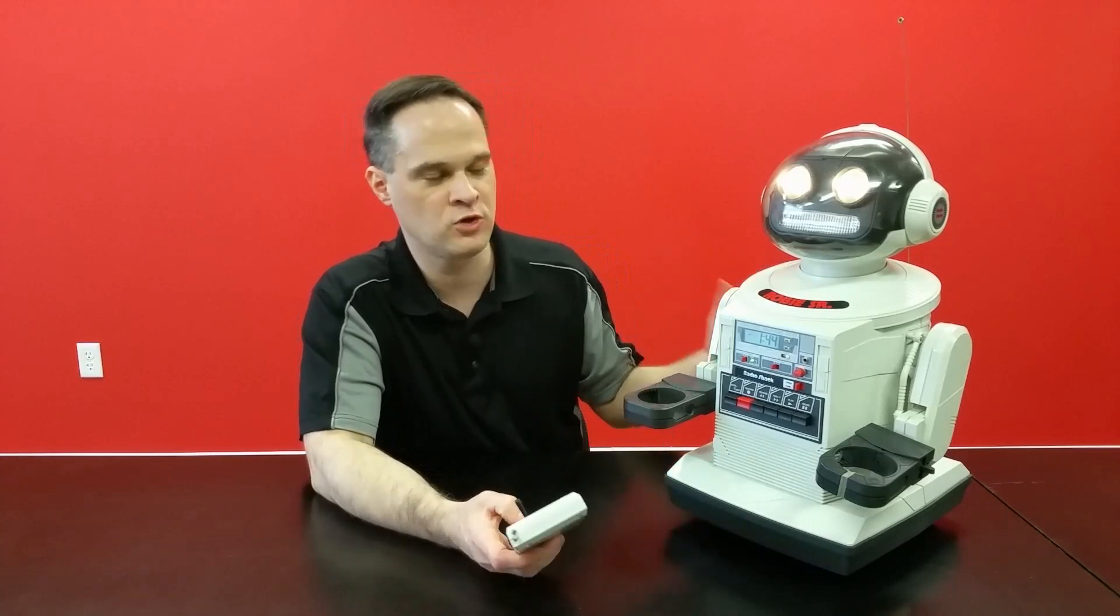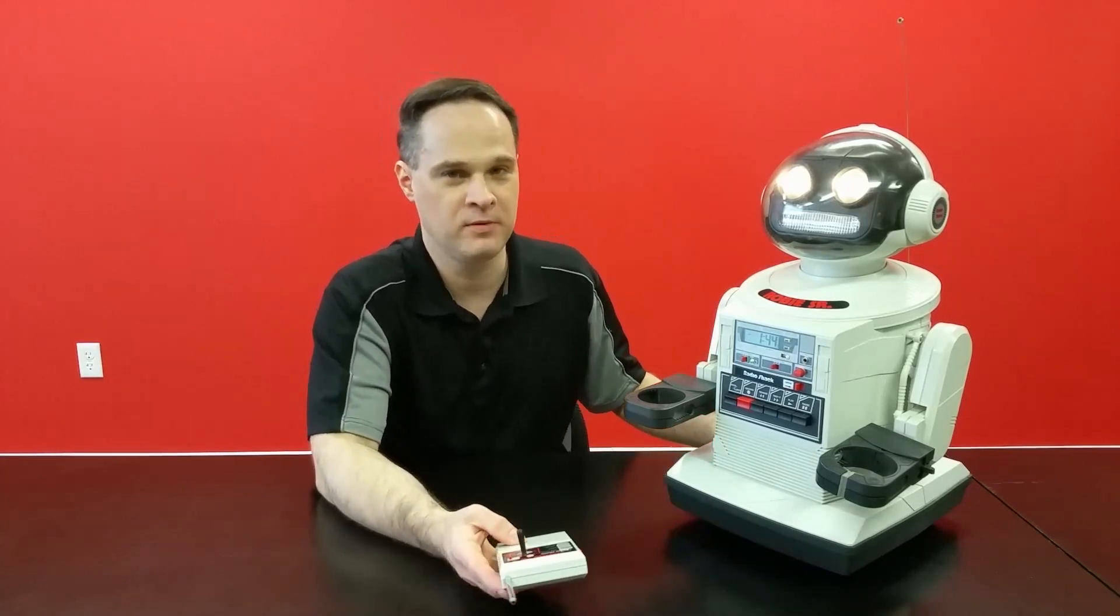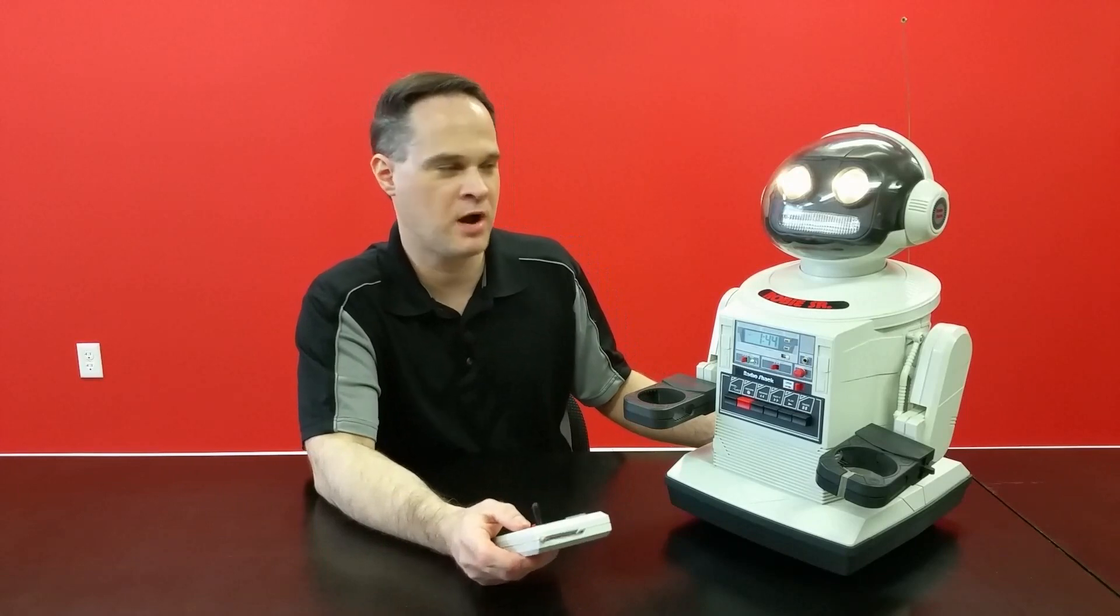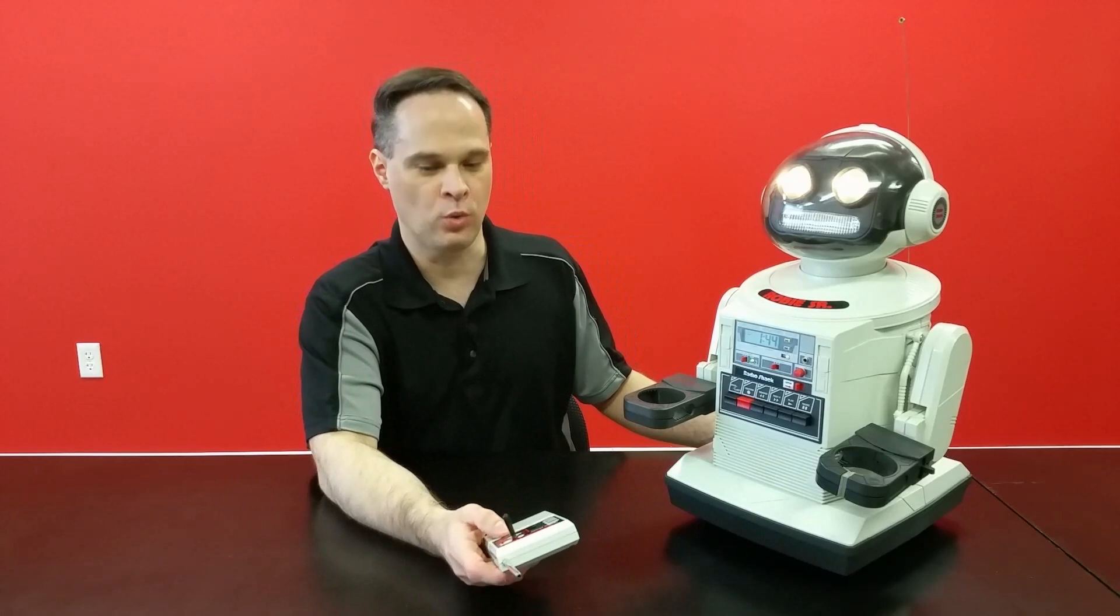That's pretty much all that Robie Senior can do and I think because of that the novelty wore off really quickly, probably the day after Christmas. We find these Robie Seniors on eBay relatively inexpensively and in pretty good shape. I think that's because the novelty wore off, and that year is when Nintendo came out as well, so that probably put a dent in Robie's career in the average child's household.